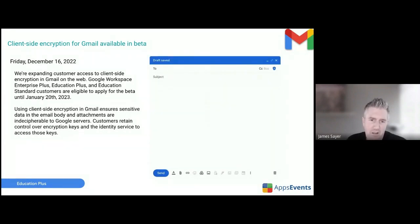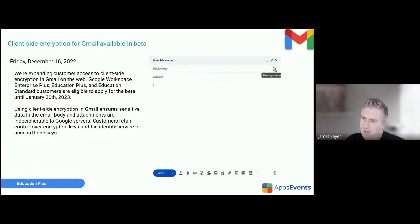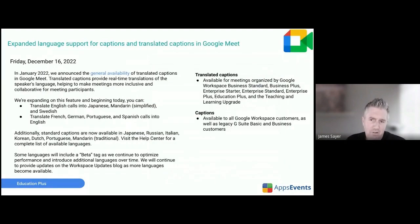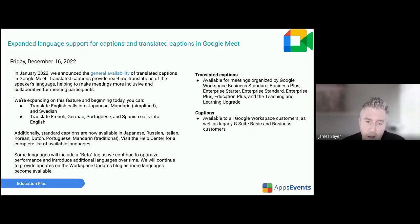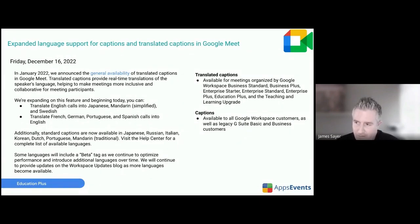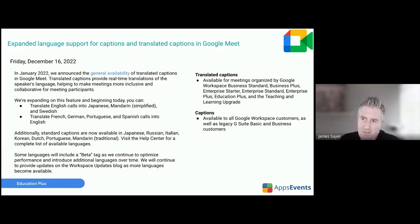We've touched on client-side encryption for Gmail before. The last update to cover is expanded support for captions and translated captions in Google Meet. Japanese, Mandarin, and Swedish have been added. English can now be translated into various languages, and you can also translate French, German, Portuguese, and Spanish into English. Other languages are pending rollout in the future. And that's it for the Workspace updates.